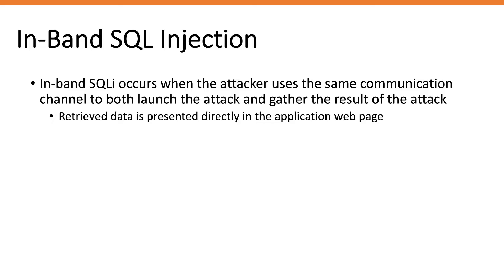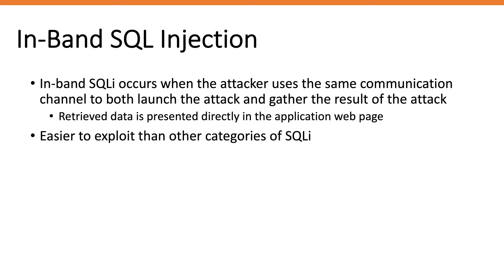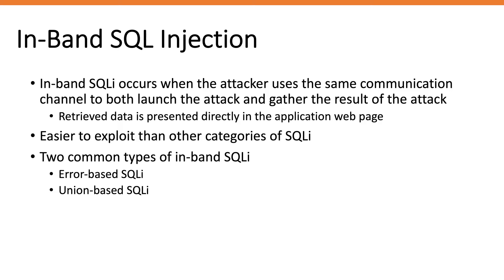In-band SQL injection vulnerabilities occur when the attacker uses the same communication channel to both launch an attack and gather results. In plain simple English: if you exploit a SQL injection vulnerability by sending a SQL payload in one of the fields of an application and then see the result presented directly to you in the application, this falls under in-band SQL injection. By the nature of how this works, it's much easier to exploit than other categories because you actually see the result of your attack in the response.